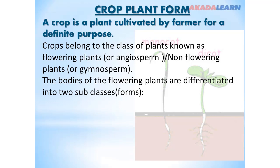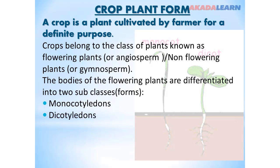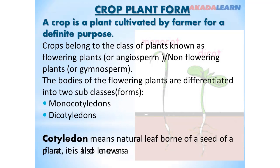The bodies of the flowering plants are differentiated into two subclasses or forms: monocotyledons and dicotyledons. Mono simply means one, while di means two. What is a cotyledon? Cotyledon means the natural leaf born of a seed of a plant — it is also known as a seed leaf.